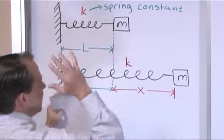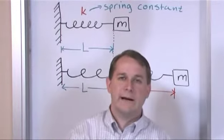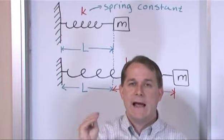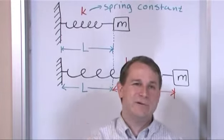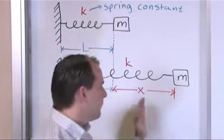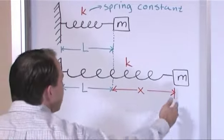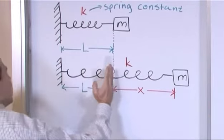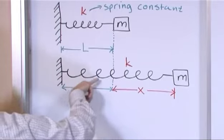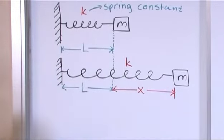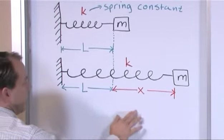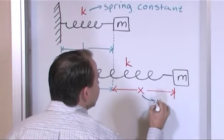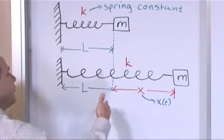T=0 is the moment we let the block go. At the beginning of the experiment, X is at its maximum. As time goes on, the spring pulls the mass back, it overshoots past equilibrium, gets compressed on the other side, then the spring pushes it back — and it oscillates back and forth. X is really X(T), a function of time. This is positive X on the stretched side, and negative X on the compressed side.